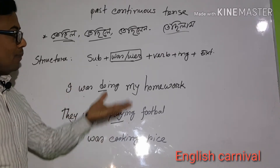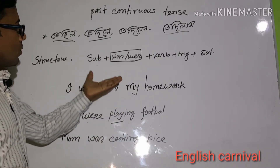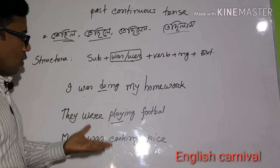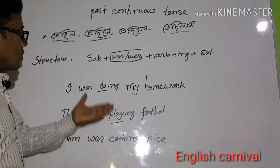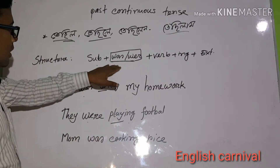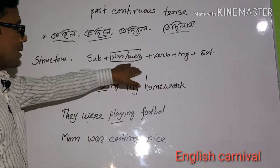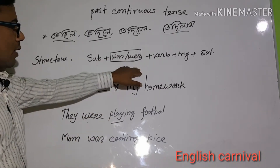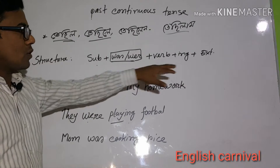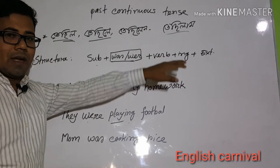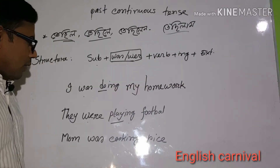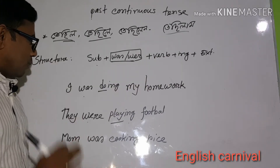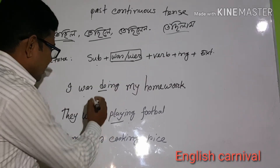So you can understand past continuous tense easily. For present continuous tense, we use am/is/are, and for past continuous tense, we use was/were. The structure remains the same otherwise. Now let's move on to negative sentences.